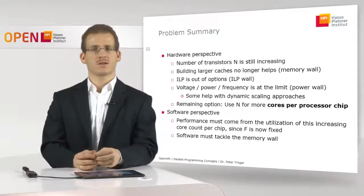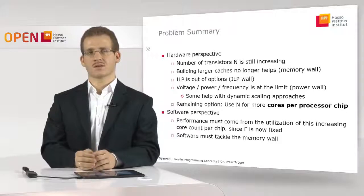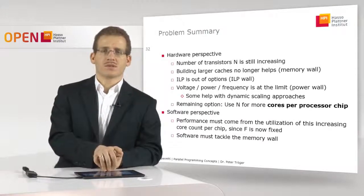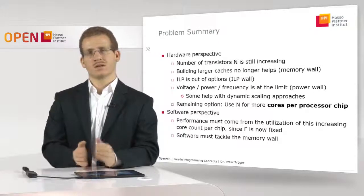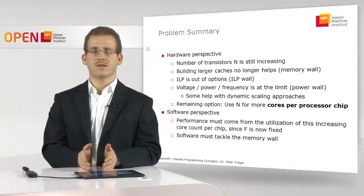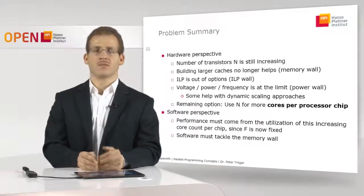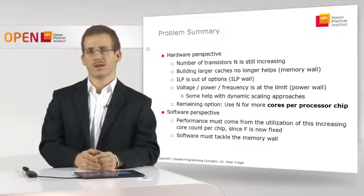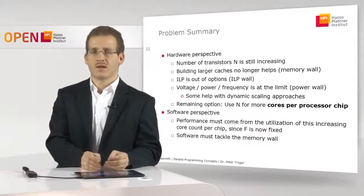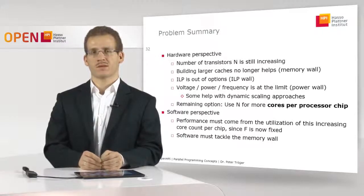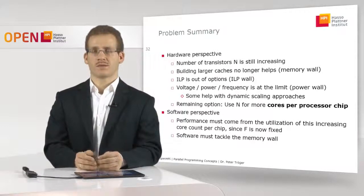Hardware people use the additional transistors to build more computational units — more cores on one processor chip. This leads to the situation that software people must use these resources to speed up their software. The frequency is fixed, ILP no longer helps to a large degree, and caching effects are limited. So the only chance for software performance improvements is to use the cores delivered through Moore's law in modern processor technology. Even with additional cores available for faster processing, the memory wall is still there — it doesn't go away. So modern programming must not only deal with the usage of cores in a system, but also with tackling more and more arising memory wall issues.